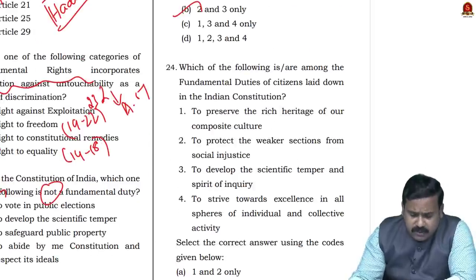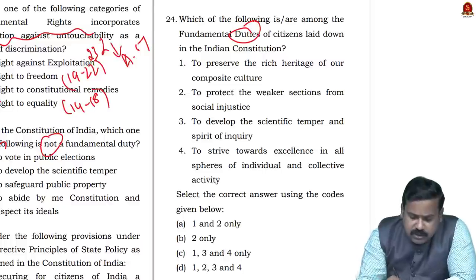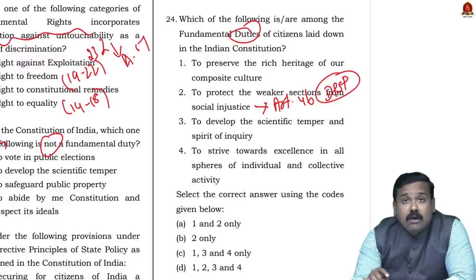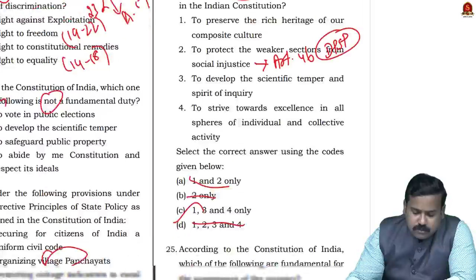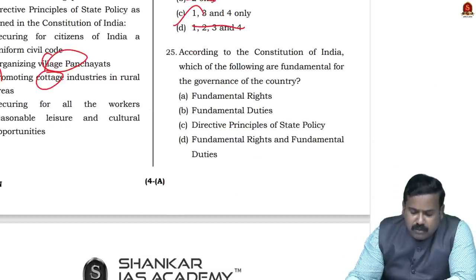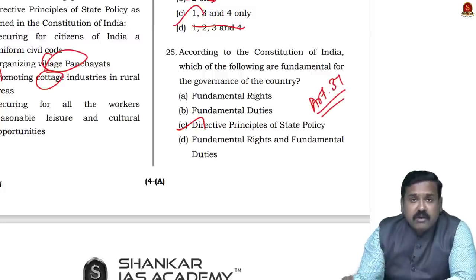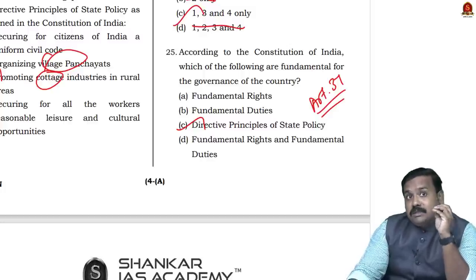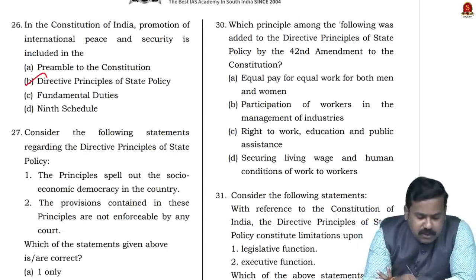Question 24: Which of the following is among the fundamental duties? Article 46, which promotes educational and economic interests of weaker sections, comes under DPSP — it is the state's duty, not a citizen's fundamental duty. So eliminate option 2; the answer is naturally 1, 3, and 4. Question 25: According to the constitution, which are fundamental for the governance of the country? This is given in Article 37 of the Directive Principles — even though non-enforceable, they are fundamental in the governance of the country.